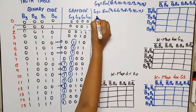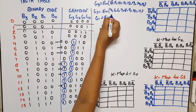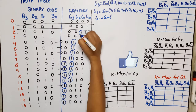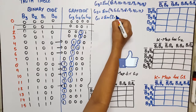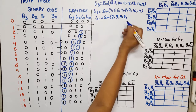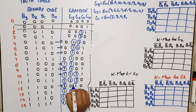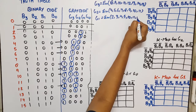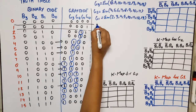For G1, the minterm expression is: G1 = Σm(2, 3, 4, 5, 10, 11, 12, 13).